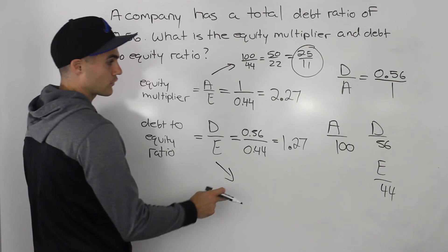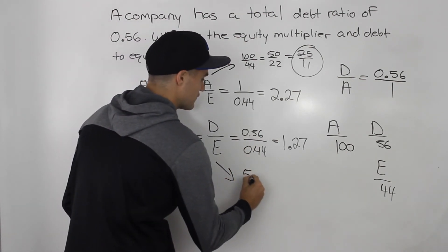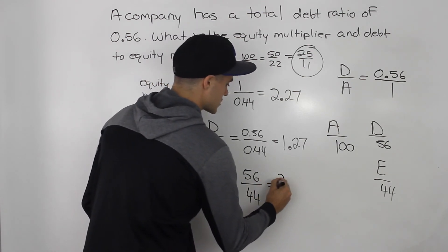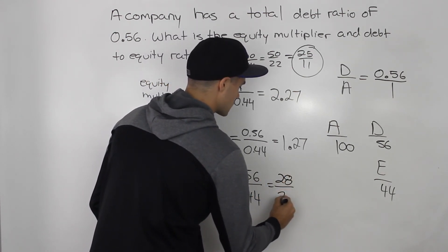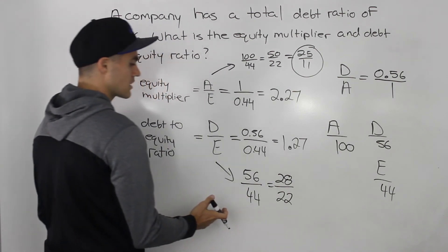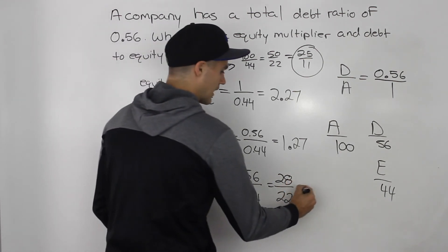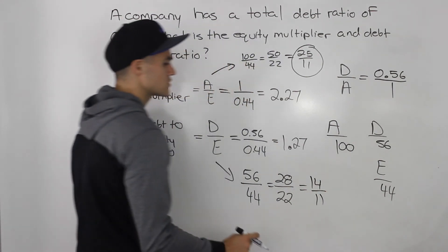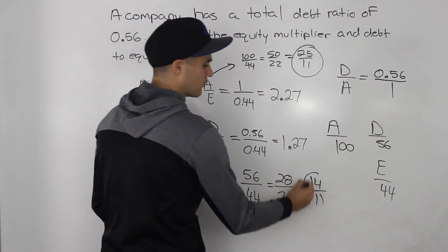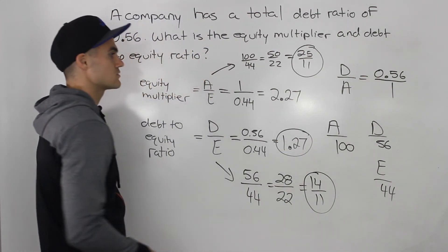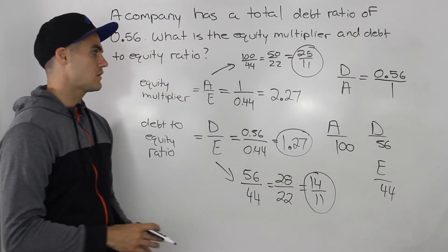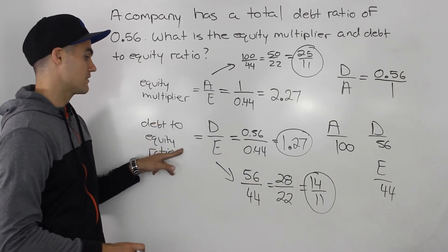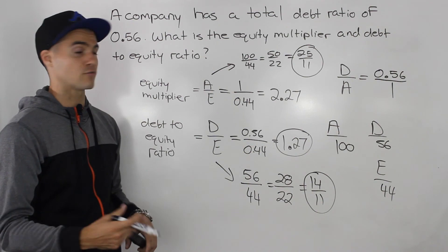Then same thing here, this debt over equity, it would be 56 over 44. That reduces to 28 over 22 if we divide both the numerator and the denominator by 2. And then this reduces to 14 over 11 if we divide by 2 again. And then 14 over 11 is the same as this 1.27. So, either way, these are the answers to both the equity multiplier and the debt to equity ratio in two different forms, in decimals and in fractions.